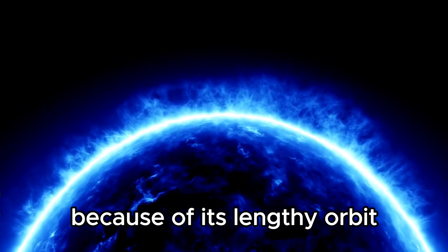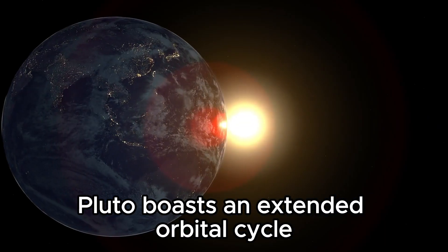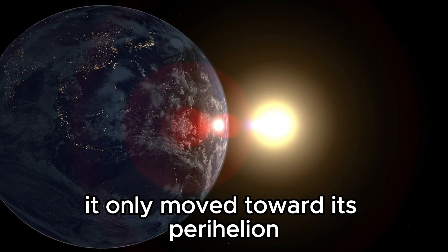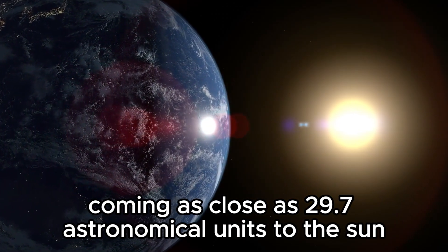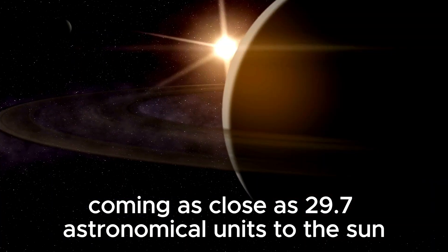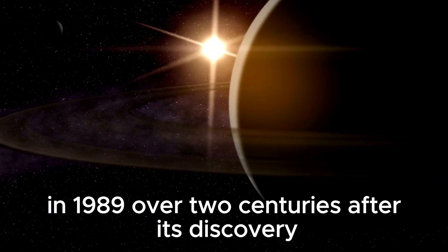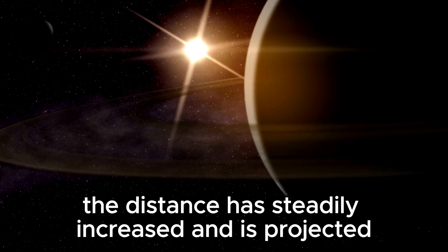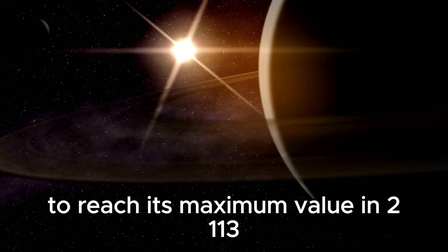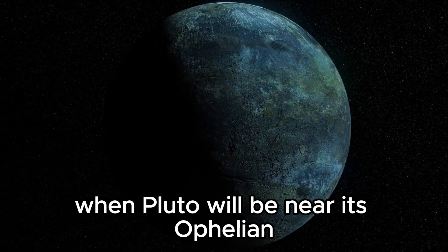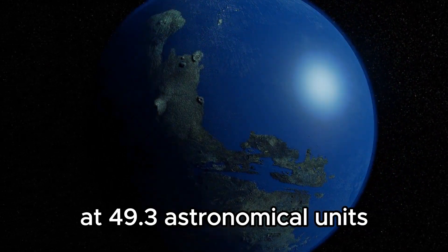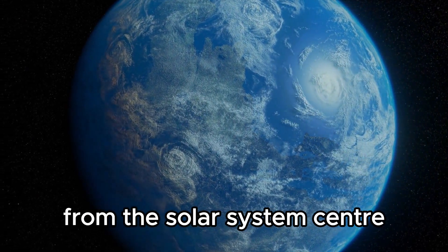Because of its lengthy orbit, Pluto boasts an extended orbital cycle. It only moved toward its perihelion, coming as close as 29.7 astronomical units to the sun, in 1989. Over two centuries after its discovery, the distance has steadily increased and is projected to reach its maximum value in 2113, when Pluto will be near its aphelion at 49.3 astronomical units from the solar system center.